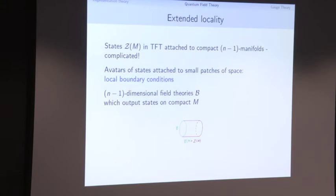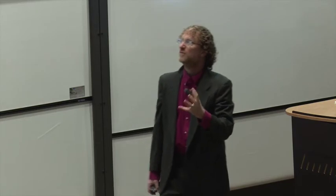We'd like to do a similar simplification for quantum field theory. The question is: what's the analog for topological field theory in higher dimensions? In order to explain that, we need the notion of extended locality — extended field theory. The idea is that even assuming everything is topological, you're still dealing with a huge amount of data: a vector space of states attached to every topological (n−1)-manifold. We'd like a more local picture — a notion of state that lives not on a whole compact manifold but on a little piece. These are called local boundary conditions.